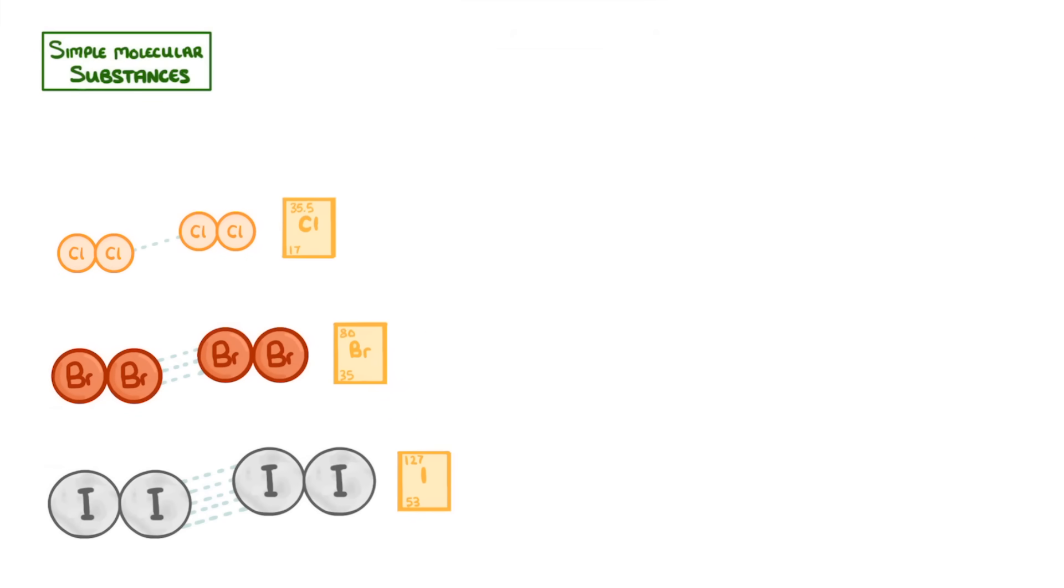Another property to note is that simple molecular substances don't conduct electricity, because there are no free electrons, and the molecules themselves have no electric charge. You'll see this point again and again in chemistry. In order to conduct electricity or heat, substances have to have some electrons or ions that are free to move about.